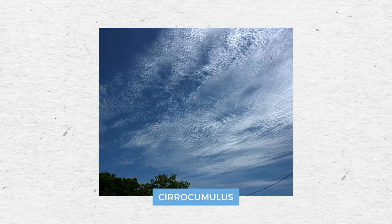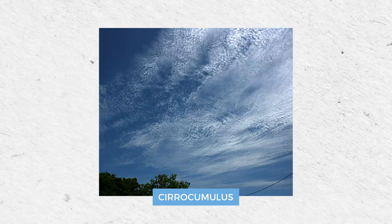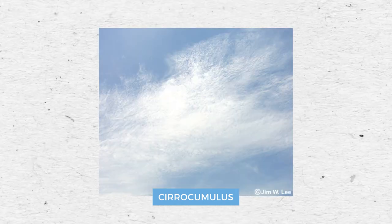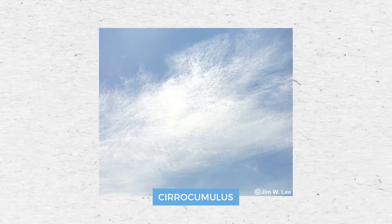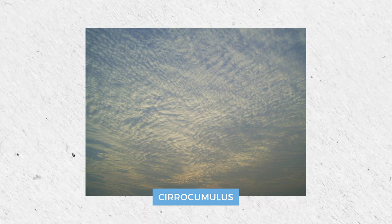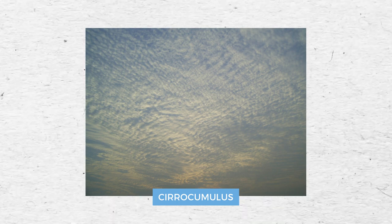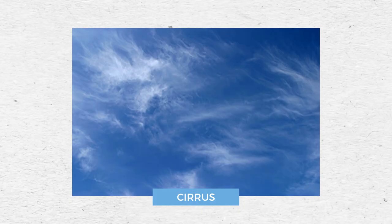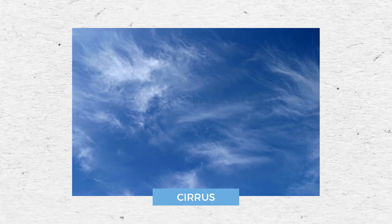While the two can look similar, cirrocumulus does not have shading, and some parts of altocumulus are darker than the rest. Cirrocumulus clouds come after cirrus clouds during a warm frontal system.